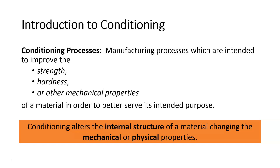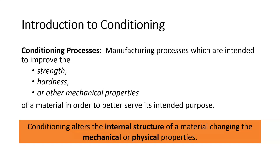Conditioning processes are usually a secondary process. There will be a primary process which may be casting, forging, or machining. Conditioning is done towards the end of the whole manufacturing process for a part, to prepare it for its final intended use.